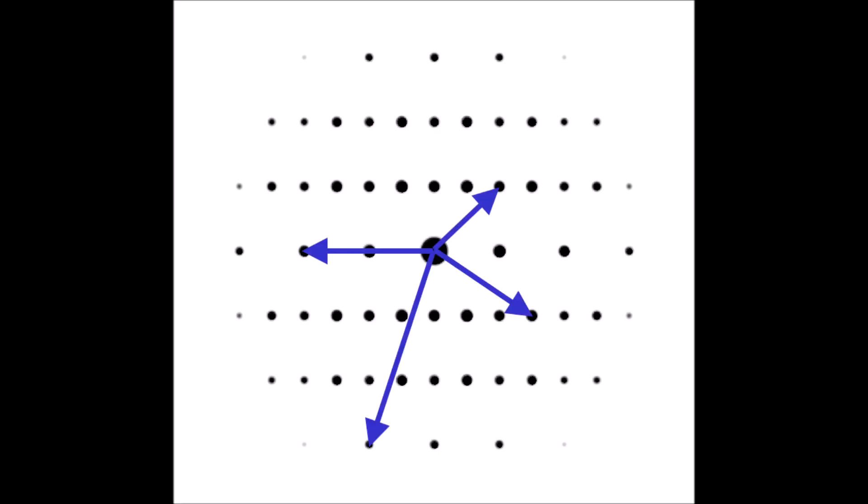So what I can do then is using my direct spot as an origin, I can draw a vector that starts at the direct spot and points to any of these Bragg spots. And so we call these G vectors in the diffraction pattern.